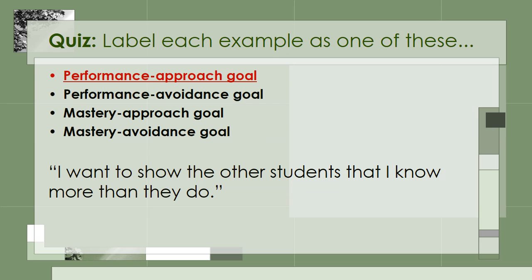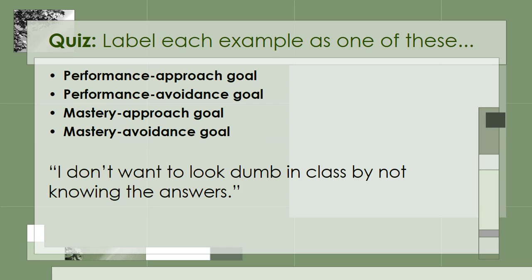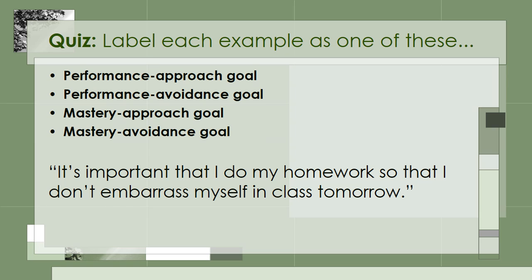Here's the next one. 'I don't want to look dumb in class by not knowing the answers.' This one is a Performance Avoidance Goal because he's concerned about how others will perceive his competence, and he doesn't want to seem incompetent to them. This student says, 'It's important that I do my homework so that I don't embarrass myself in class tomorrow.' This one is similar because the student is concerned about what others think, and she wants to avoid looking incompetent, which would embarrass her.